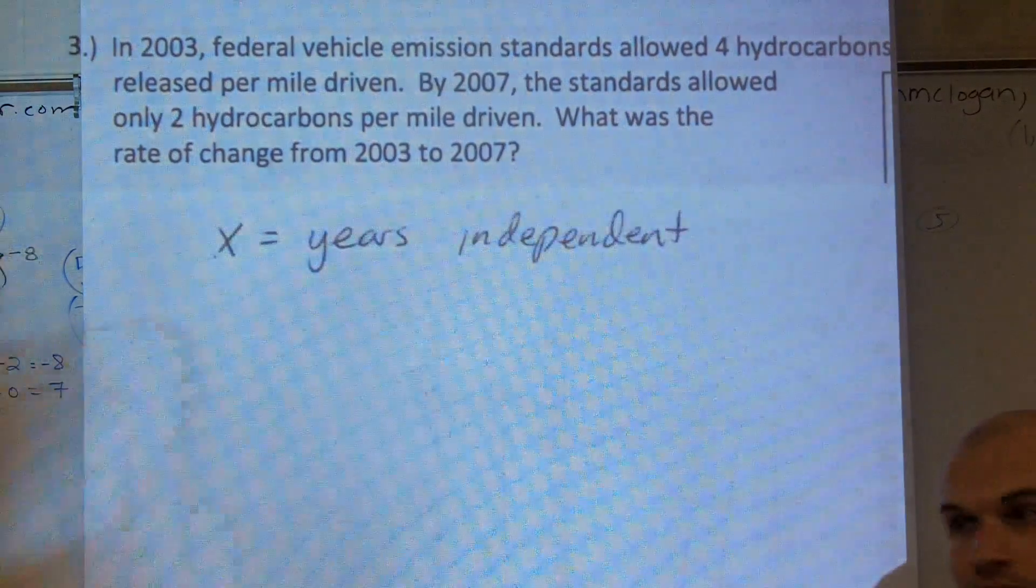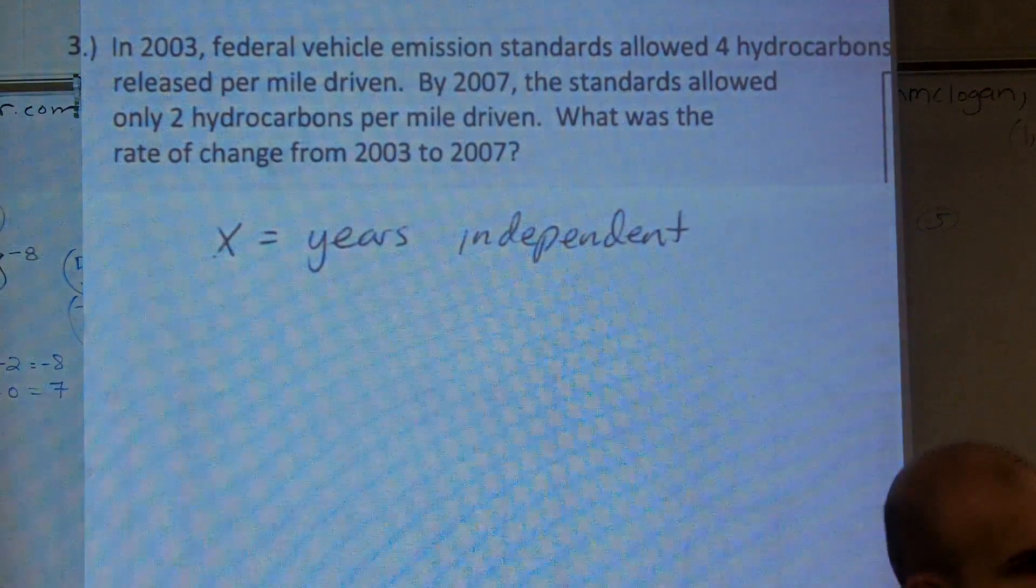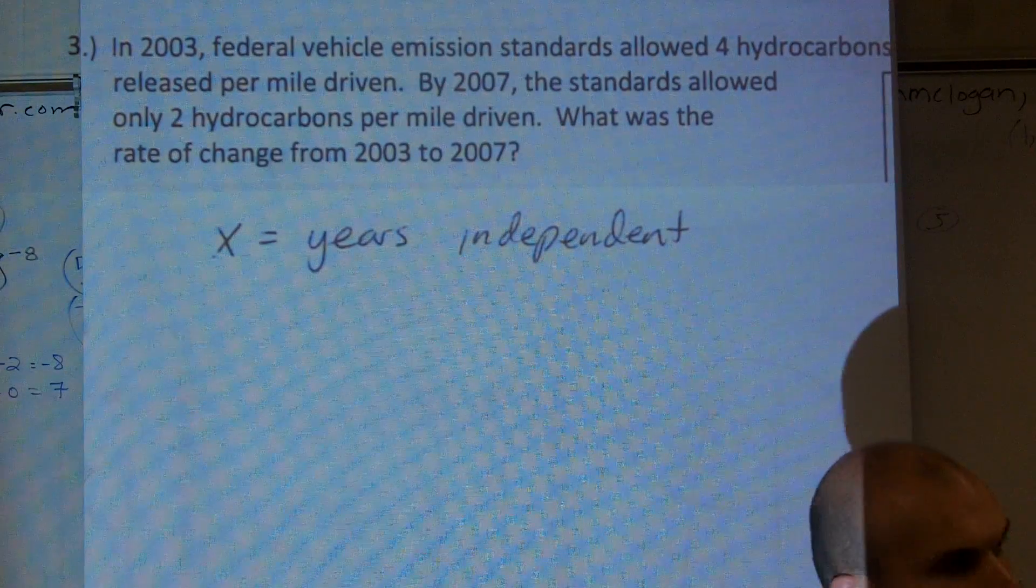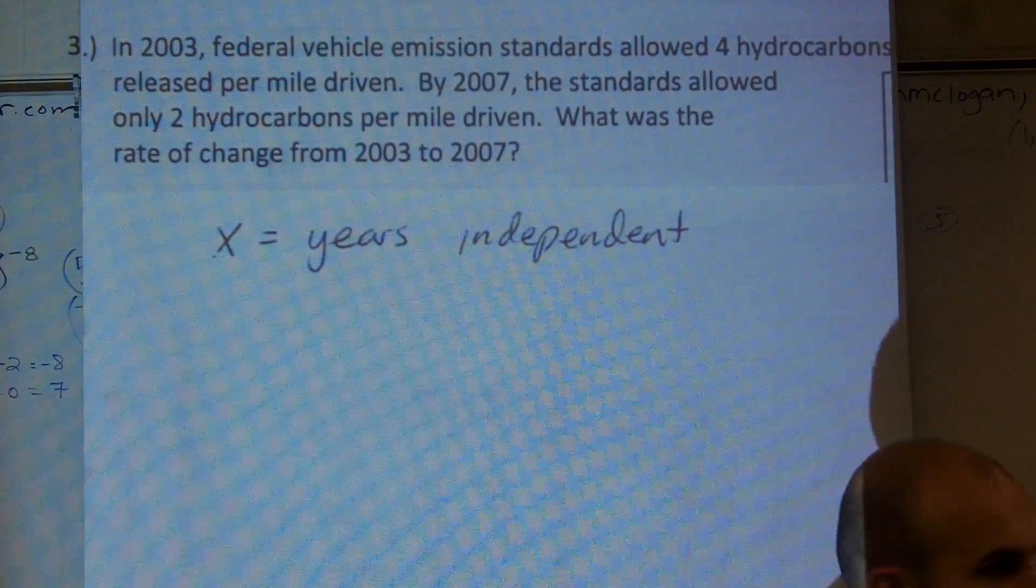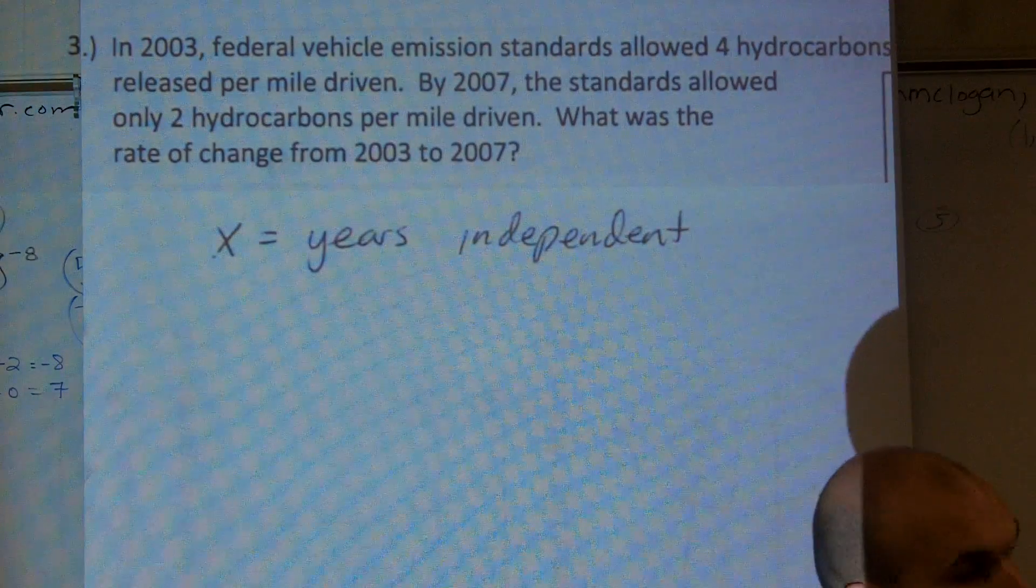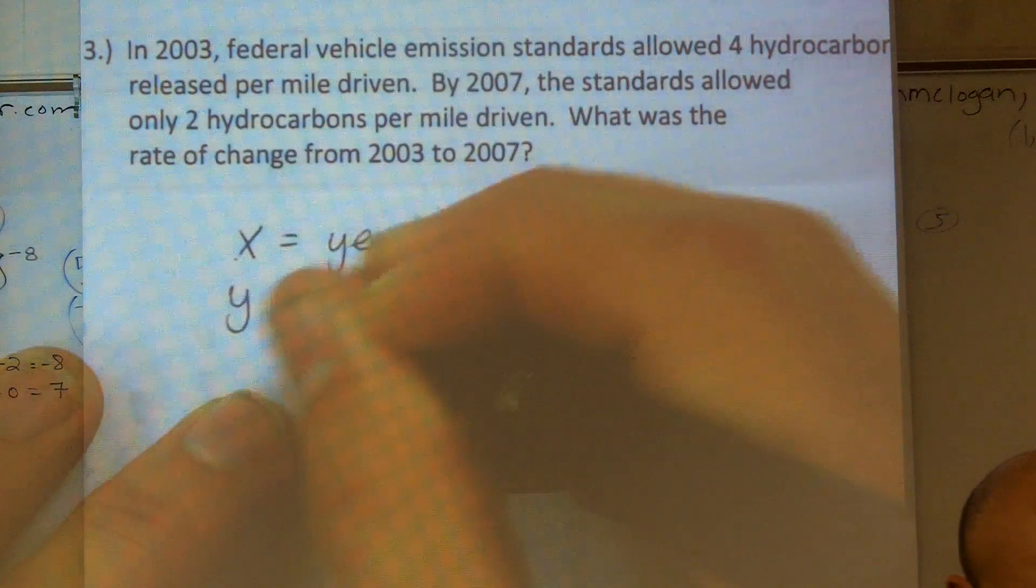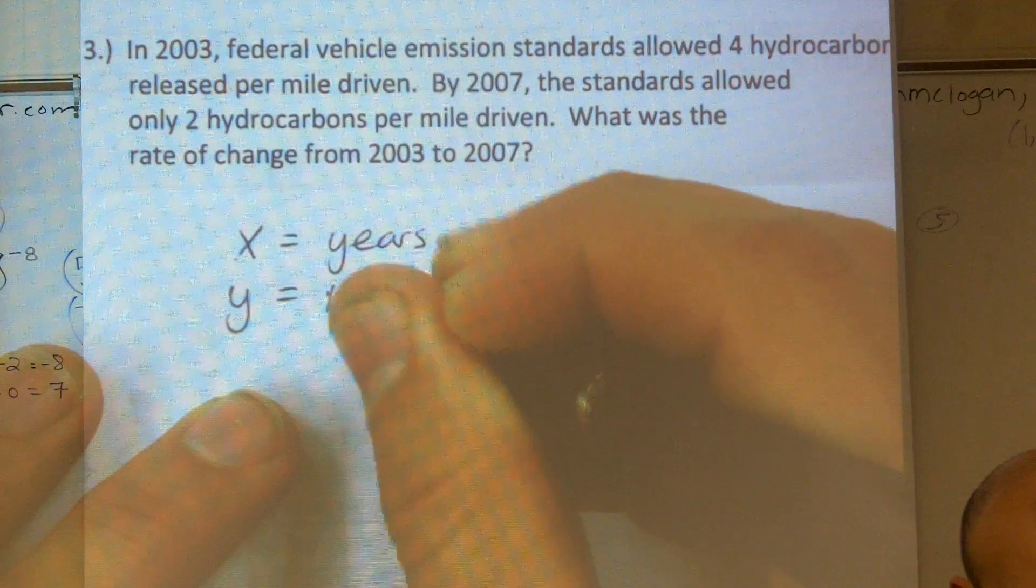It doesn't matter what's going on in each year. Each year is going to happen one after another. So it doesn't matter how many hydrocarbons are allowed or disallowed. Your year is always going to come next. So your years are independent. So therefore, my y is the number of hydrocarbons allowed.